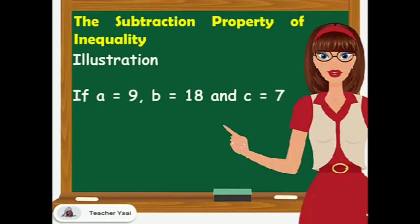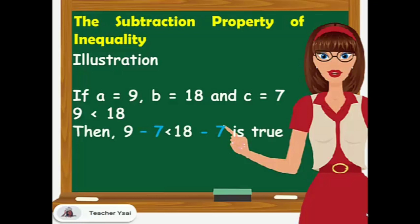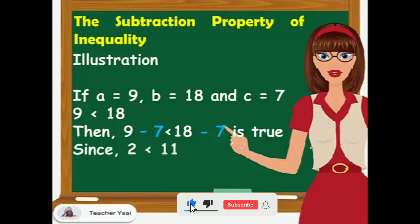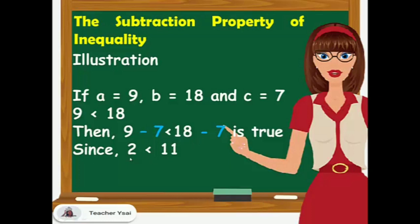Another example: if A equals 9, B equals 18, and C equals 7, we know that 9 is lesser than 18. If we subtract 7 from both sides of the inequality, we have 9 minus 7 is lesser than 18 minus 7, which is true since 9 minus 7 is 2 and 18 minus 7 is 11, so 2 is lesser than 11.